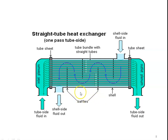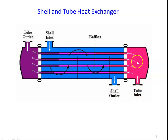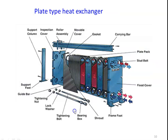In the single-pass shell and tube heat exchanger, the tube-side fluid enters and flows from right to left and leaves on the other side, while the shell-side fluid enters and flows in the direction of the arrows guided by the baffle plates and leaves on the other side.